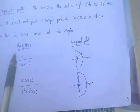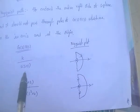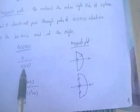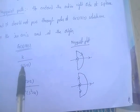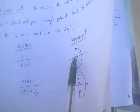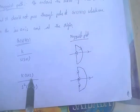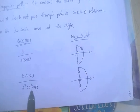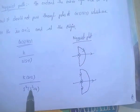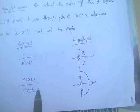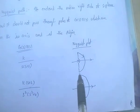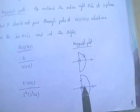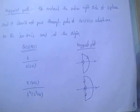For example, G(S)·H(S) = K / [S(S+1)]: one pole is at the origin, one pole is on the left side. For another example with S² + 4 in the denominator, S equals plus or minus 2j — these are imaginary poles. The Nyquist path does not pass through the imaginary poles or poles at the origin.